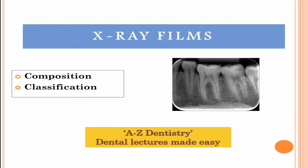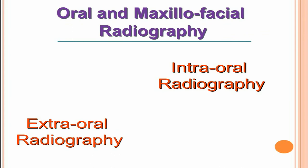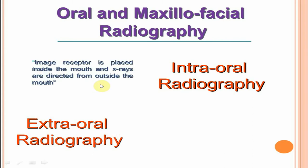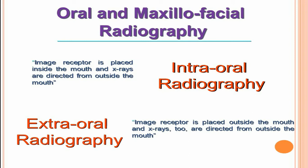There are two types of radiographic techniques in oral and maxillofacial radiography: intraoral radiography and extraoral radiography. In intraoral radiography, the image receptor is placed inside the patient's mouth and X-rays are directed from outside. In extraoral radiography, the image receptor is placed outside the patient's mouth.